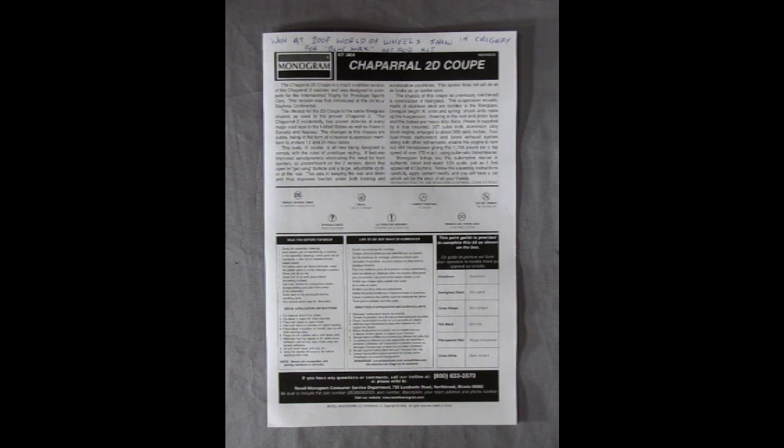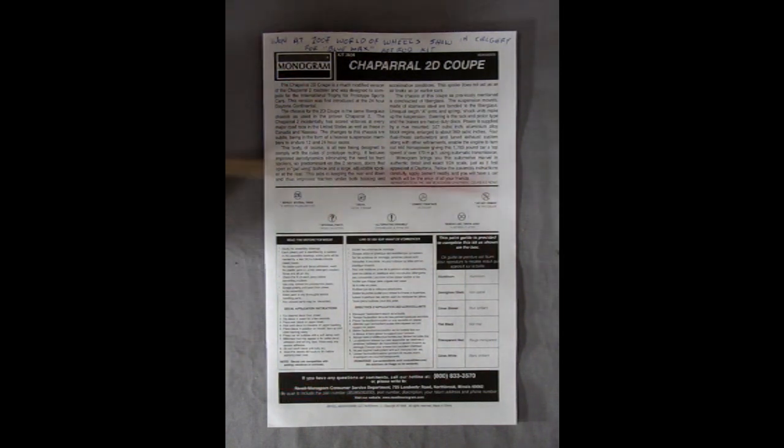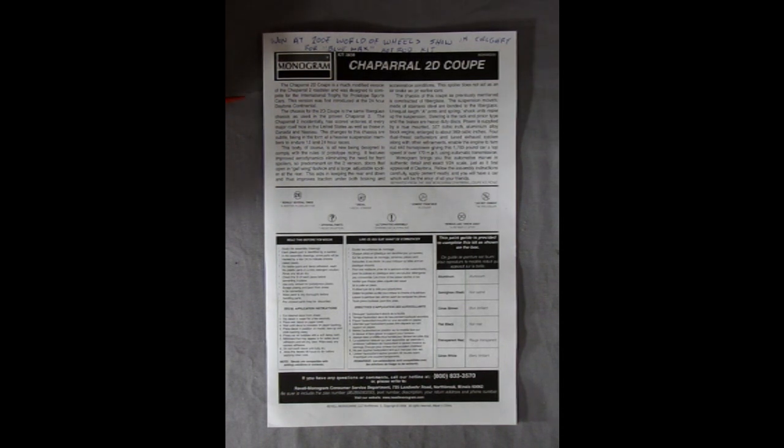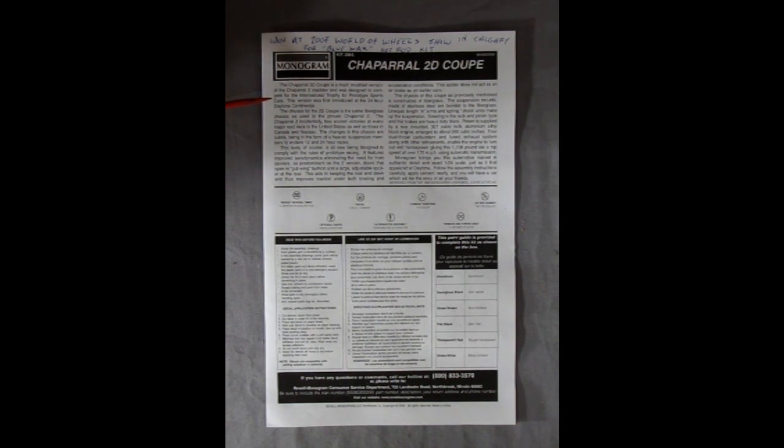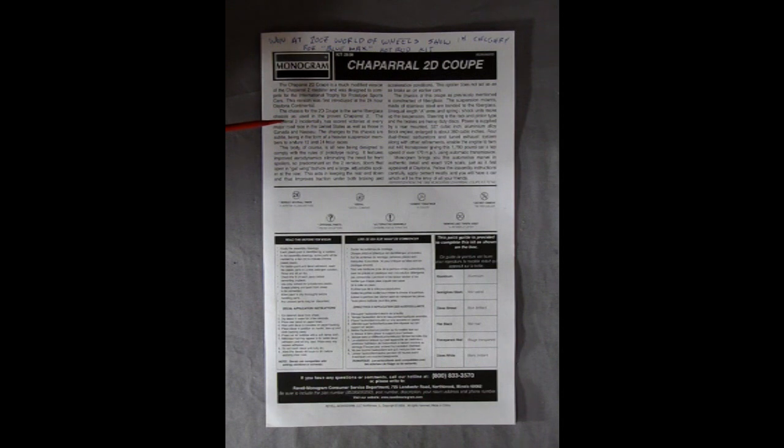And we'll take a look at these. Okay, so here we have our Chaparral instructions. And I've just turned the camera around so that they would fit in better in our frame here. So we've got this great write-up by Monogram. And it really says, The Chaparral 2D Coupe is a much modified version of the Chaparral 2 Roadster and was designed to compete for the International Trophy for Prototype Sports Cars. This version was first introduced at the 24-hour Daytona Continental. The chassis for the 2D Coupe is the same fiberglass chassis as used in the proven Chaparral 2.